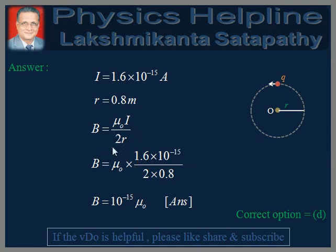We now substitute the values. B = μ₀ × I / (2R). We keep μ₀ as is. I is 1.6 × 10⁻¹⁵ amperes, divided by 2 × 0.8 meters, which equals 1.6. The 1.6 in the denominator cancels with 1.6 in the numerator, giving us B = μ₀ × 10⁻¹⁵, which is the answer.